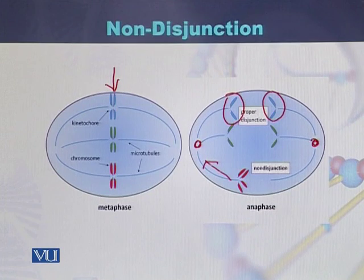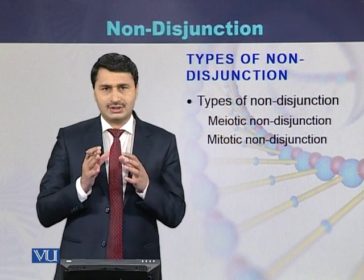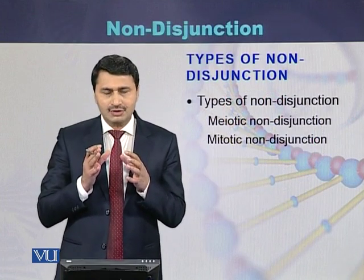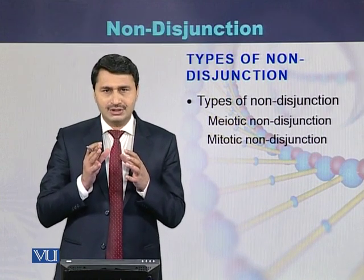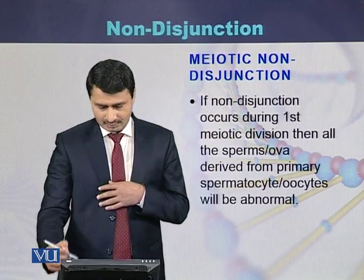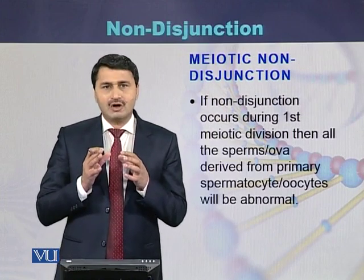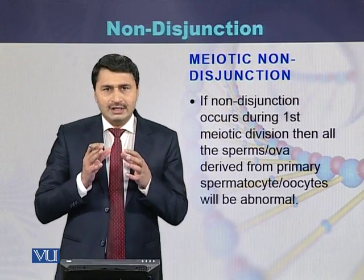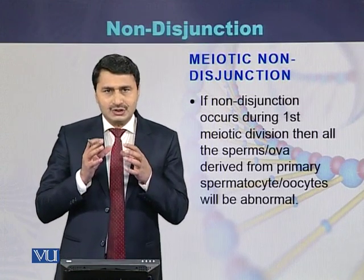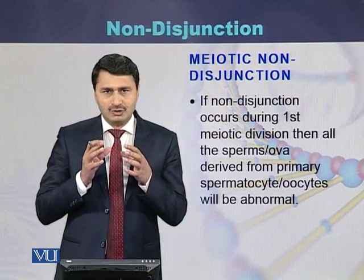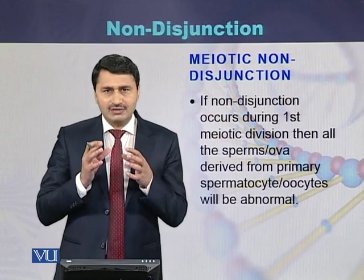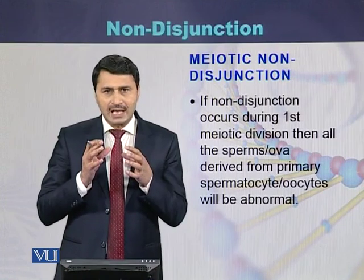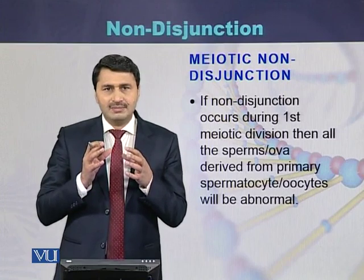There are two types of non-disjunction: the first is mitotic non-disjunction and the second is meiotic non-disjunction. In case of meiotic non-disjunction, if the non-disjunction occurs during the prophase of meiosis 1, then all the sperms or ova produced from the primary spermatocyte or primary oocyte will be abnormal.